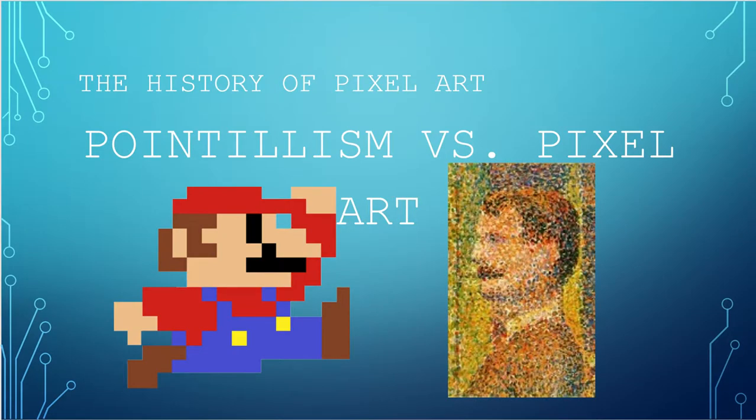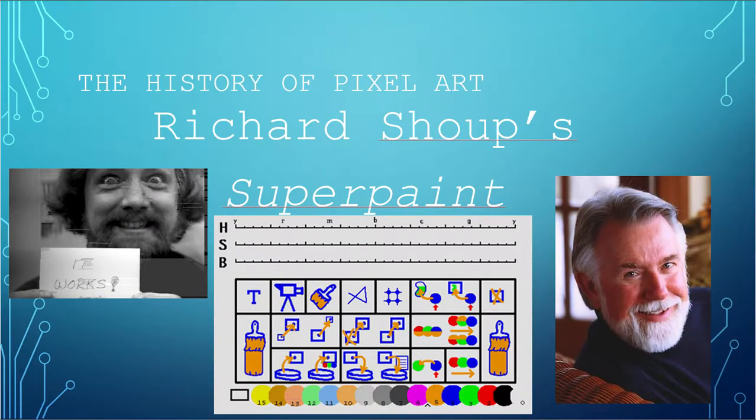Going into pixel art, we can compare pointillism to pixel art — pointillism being using dots of color to represent a painting rather than strokes and lines. However, the first true example of pixel art was created with Richard Shoup's SuperPaint software. SuperPaint was one of the beginnings of all digital paint programming, and was probably an ancestor to programs such as Final Cut and Adobe, which is what we use today.